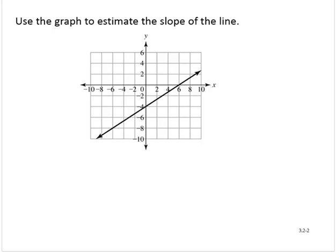Use the graph to estimate the slope of the line. There are a few different ways we can think of the slope, but one of the common ways is we can think of the slope as the ratio of the rise of the line to the run of the line as we move from one point to another.